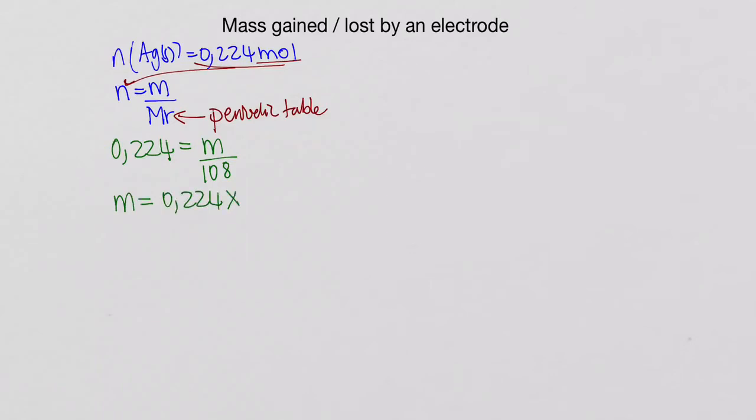If we rearrange that equation, we'll get the mass is equal to 0.224 multiplied by 108, and that will give us 24.17 grams. So that is the mass gained by the silver electrode.